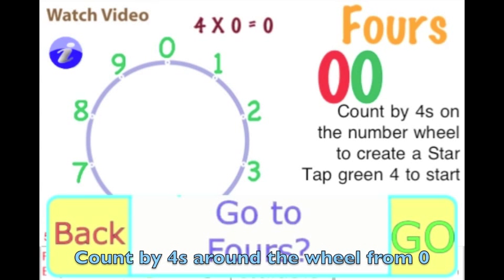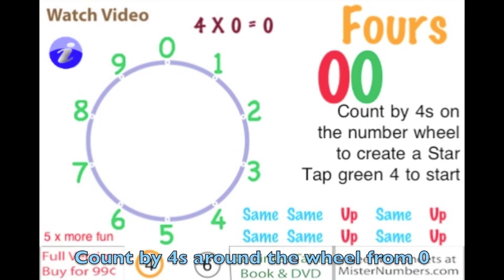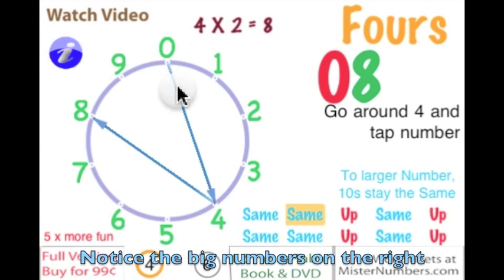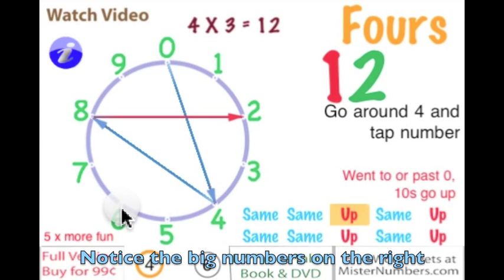Let's do the 4s on the Wheel Math app. If we go to the 4s at the bottom, we're ready to start at 0. We go around 4, we go around 4 more to 8, we go around 4 more to 2. Notice we've gone past 0 and the number is red.